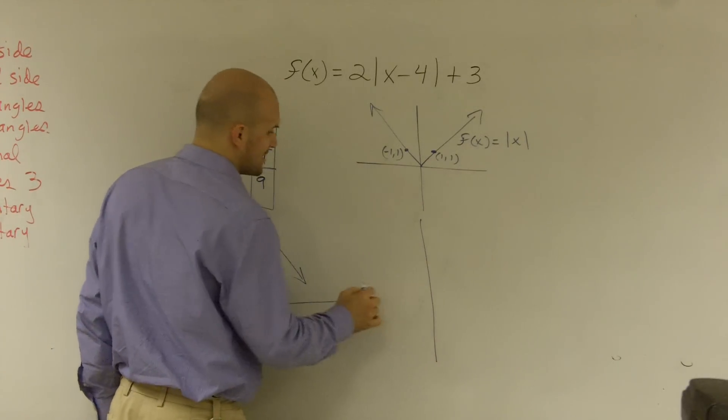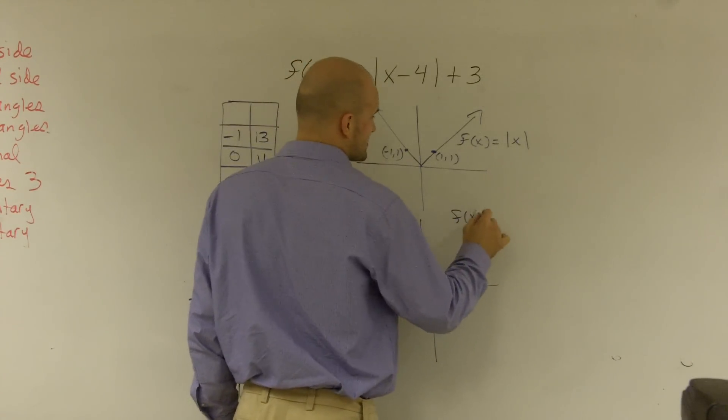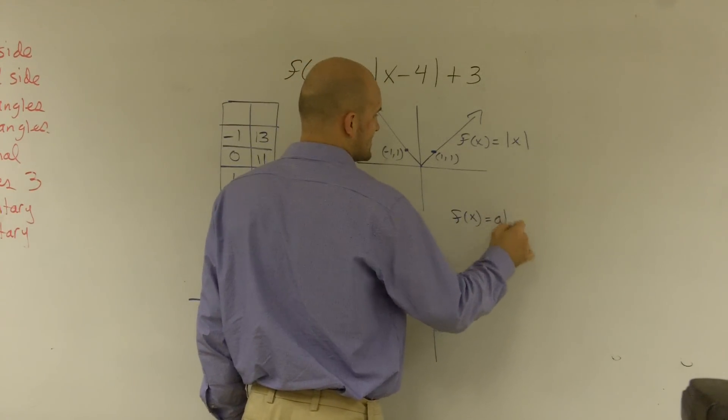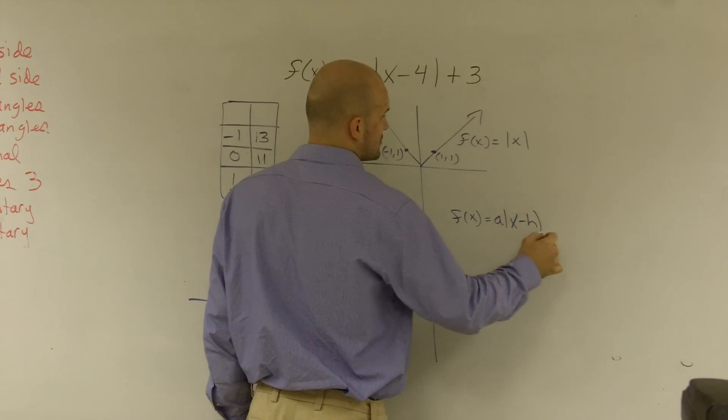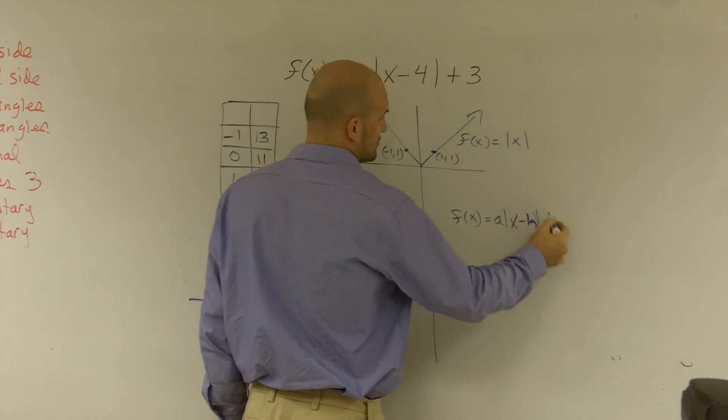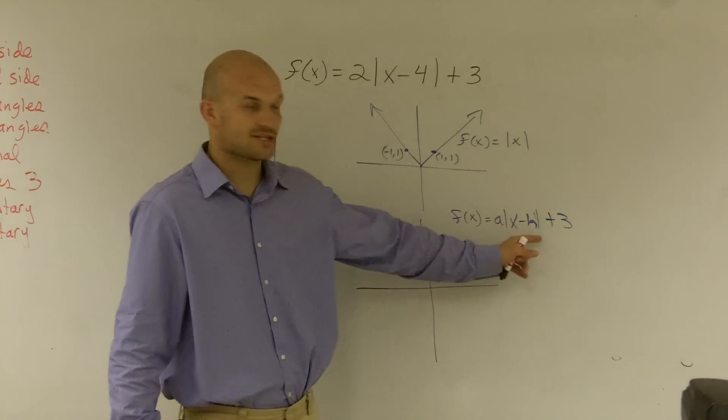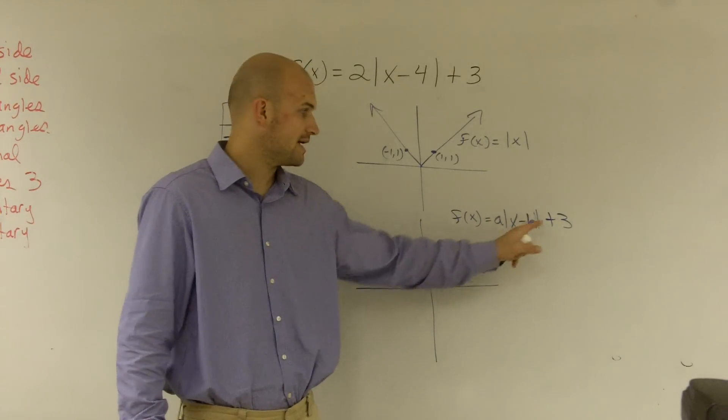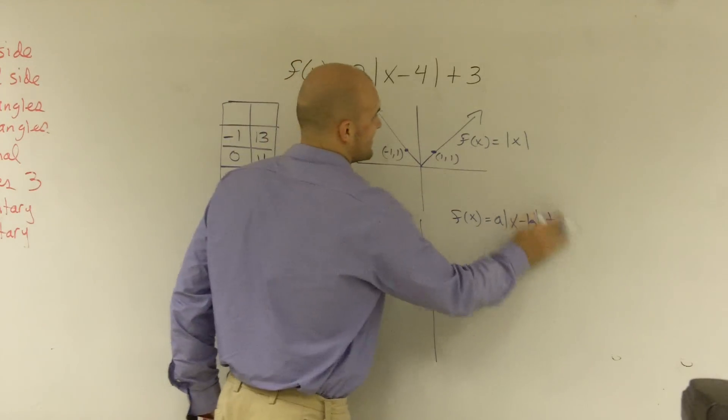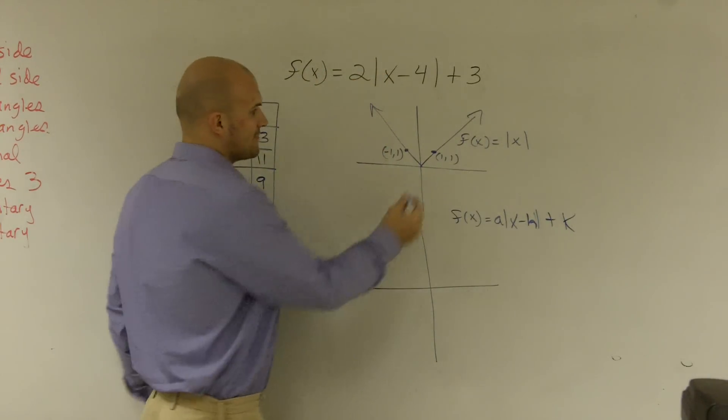we know we need to know our transformations. And the transformations is f of x equals a times absolute value of x minus h, x minus h plus k, alright? Where my h is going to tell me where to shift left or right, and my k is going to tell me where to shift up or down.